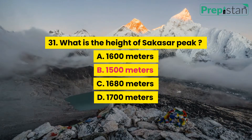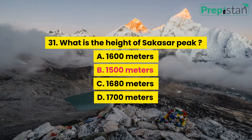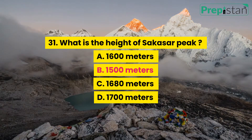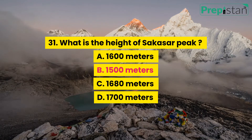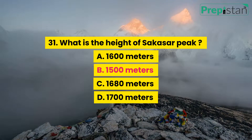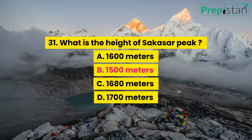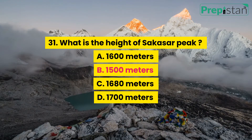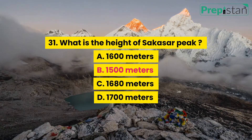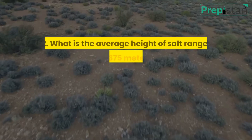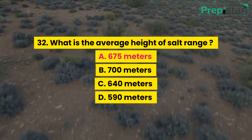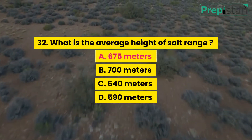Question 31: What is the height of Sakasar Peak? A. 1,600 meters, B. 1,500 meters, C. 1,680 meters, D. 1,700 meters.